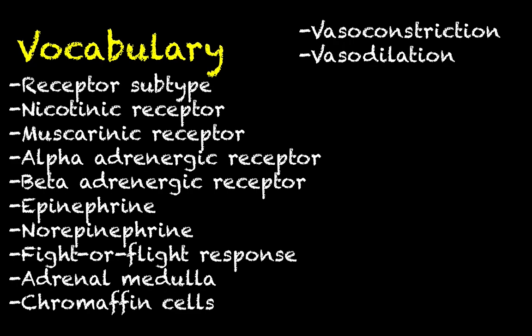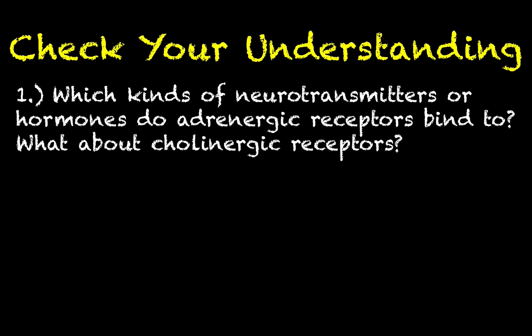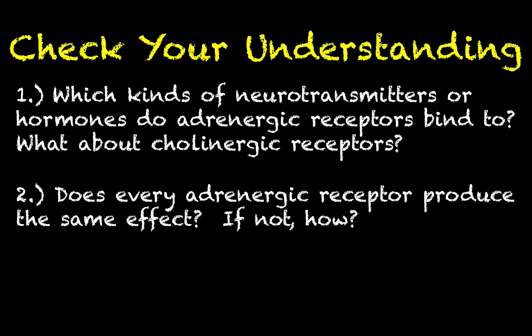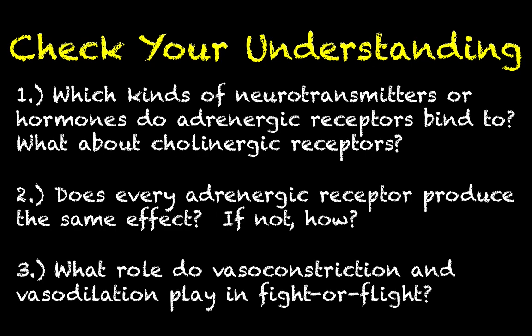Here is a list of vocabulary terms and comprehension questions to check your understanding. Number one: which kinds of neurotransmitters or hormones do adrenergic receptors bind to, and what about cholinergic receptors? Number two: does every adrenergic receptor produce the same effect, and if not, how is that possible? Number three: what role do vasoconstriction and vasodilation play in the fight-or-flight response? If you have any questions, drop them in the comments section — see you next time.